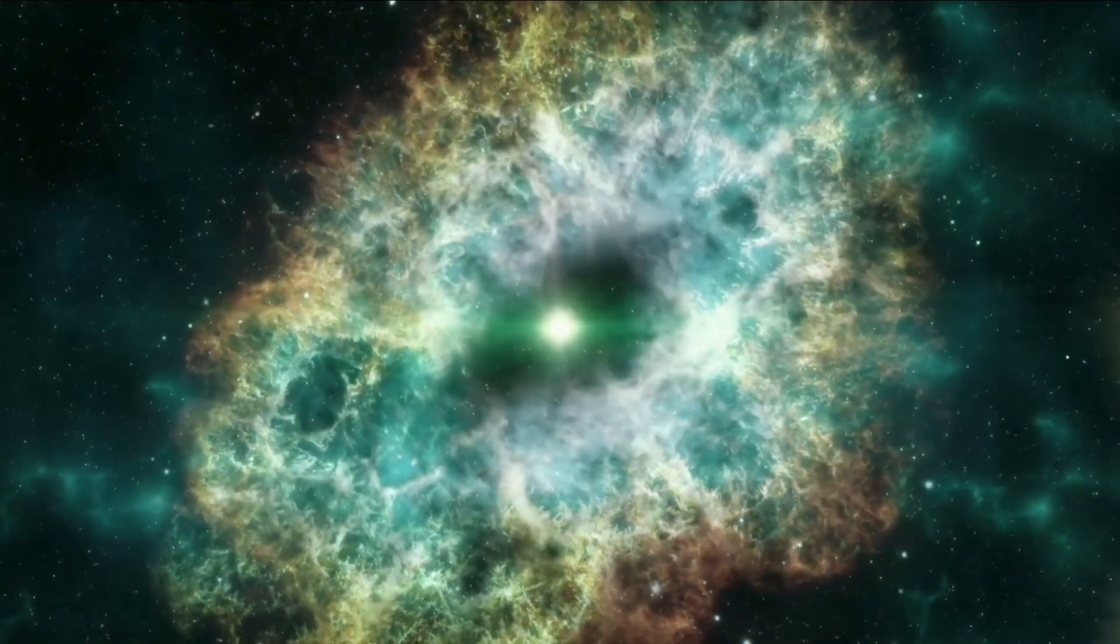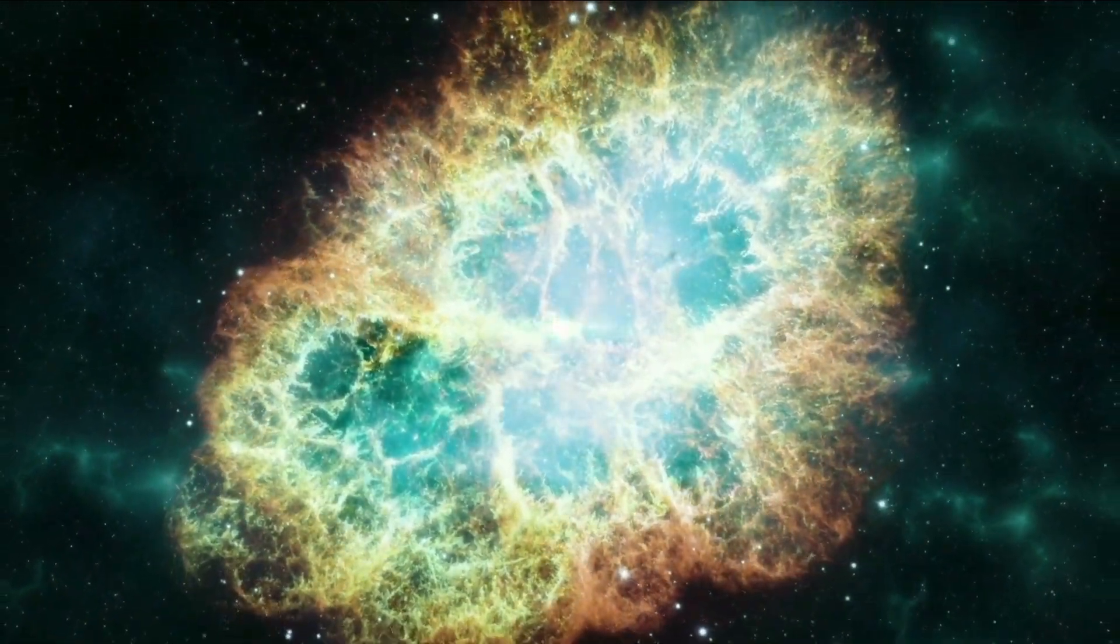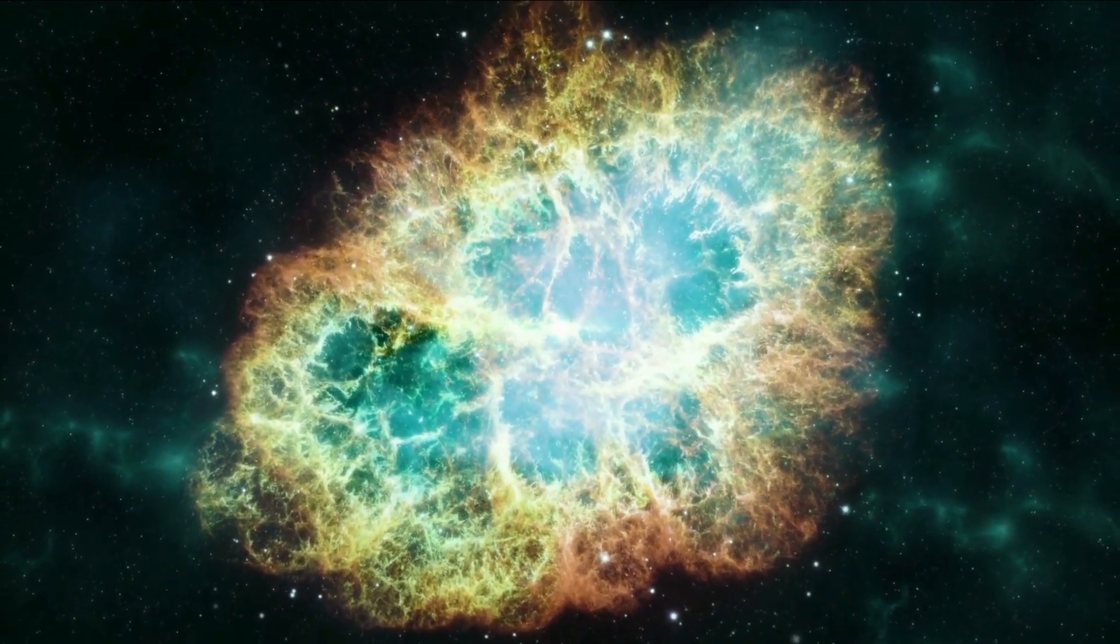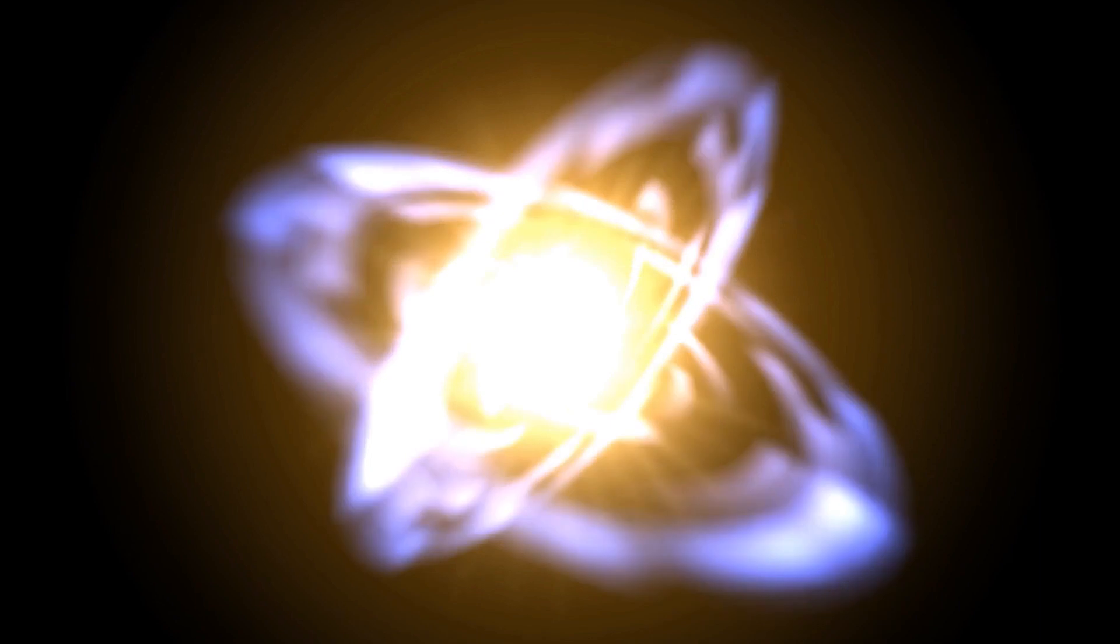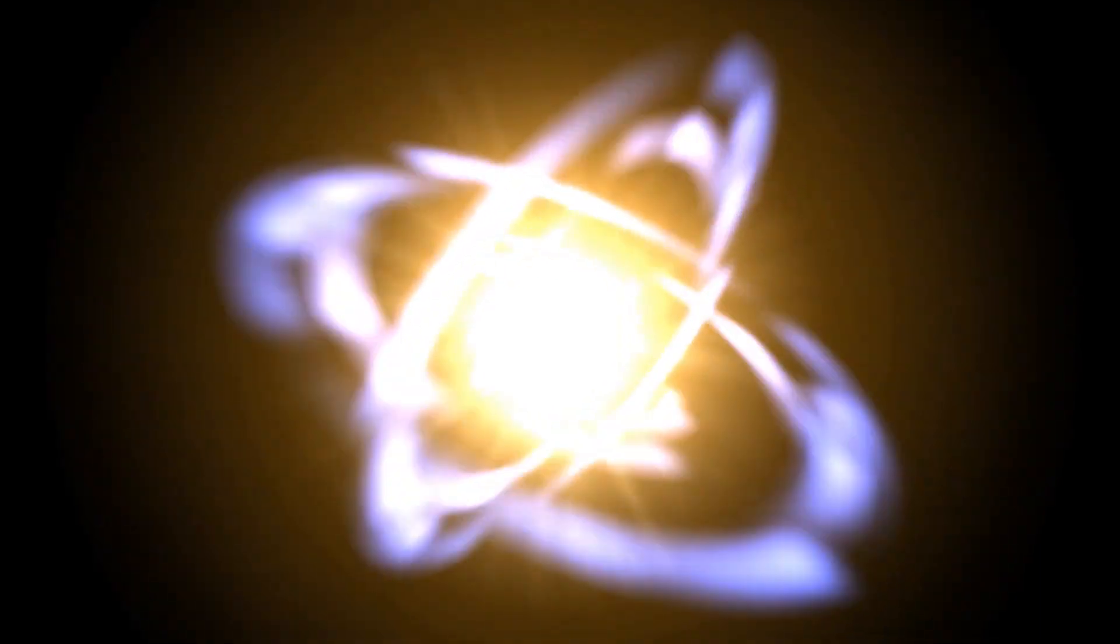Eventually, the implosion bounces back off the core, expelling the stellar material into space, forming the supernova. What's left is an ultra-dense object called a neutron star, a city-sized object that packs the mass of the sun in a small space.